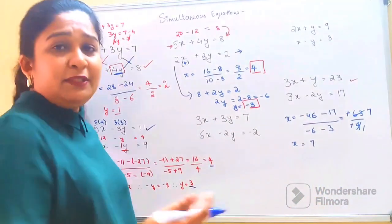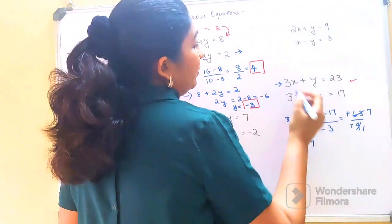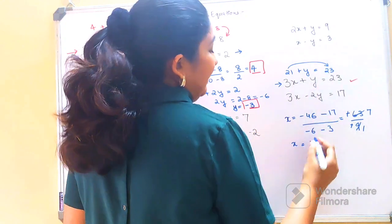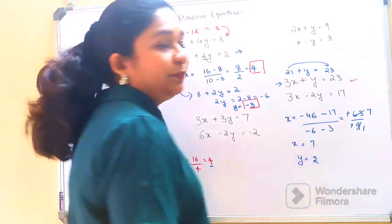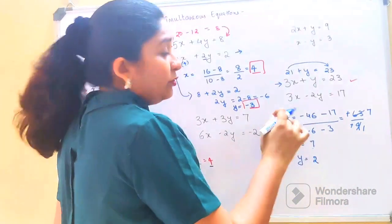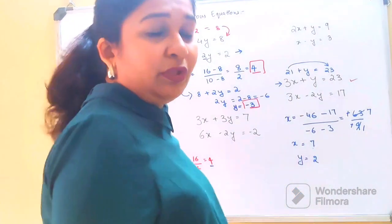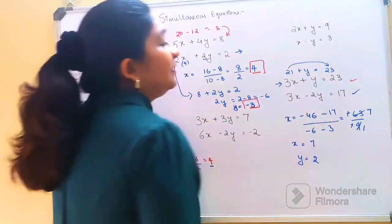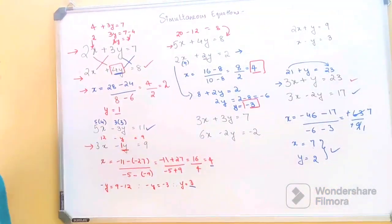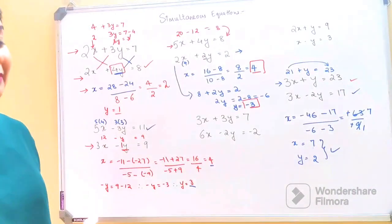Substituting x as 7 into the equation: 7 into 3 gives 21, plus y equals 23. Shifting 21 across, y equals 2. To cross-verify: 3 into 7 gives 21, minus 2 into 2 gives 4. So 21 minus 4 equals 17, which matches. Both values are absolutely fine.